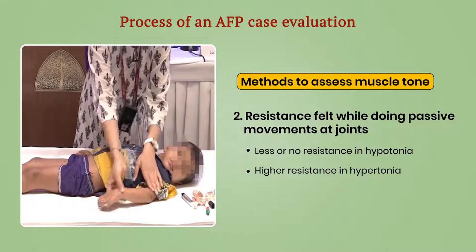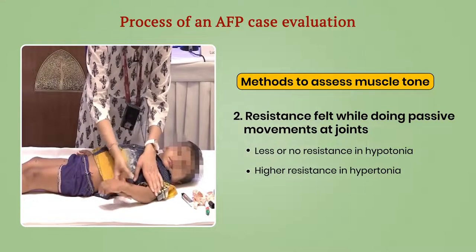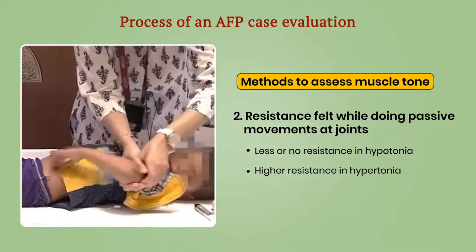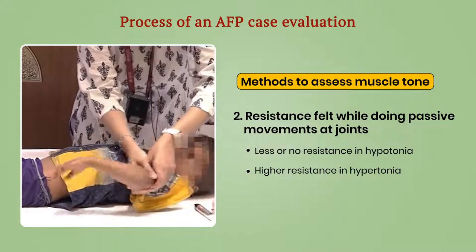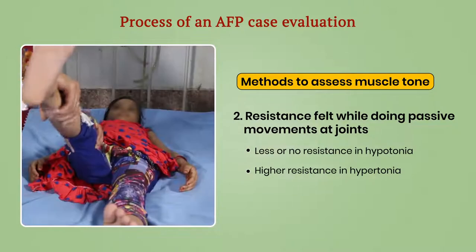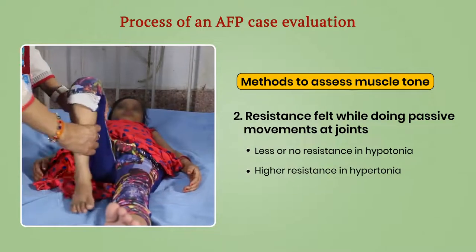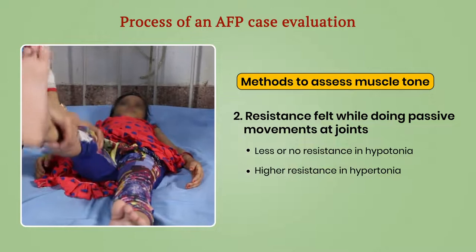Resistance to and range of passive movements at major joints is also assessed. There is less or no resistance in hypotonia, while higher resistance is found in hypertonia.